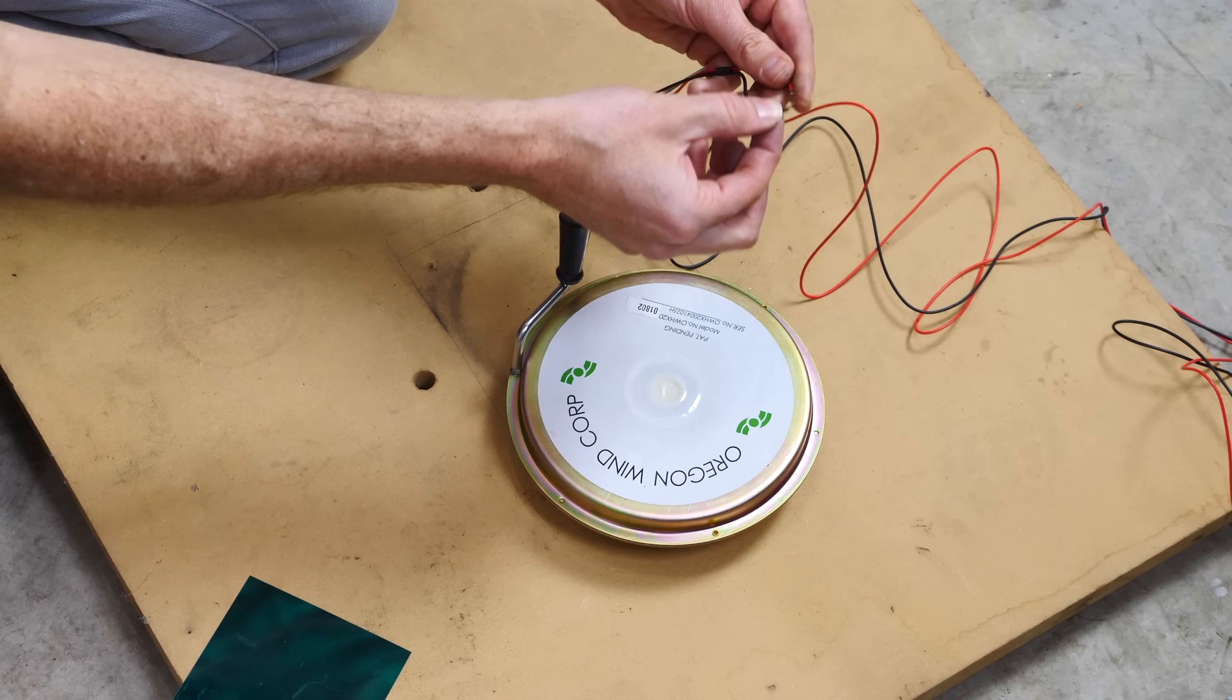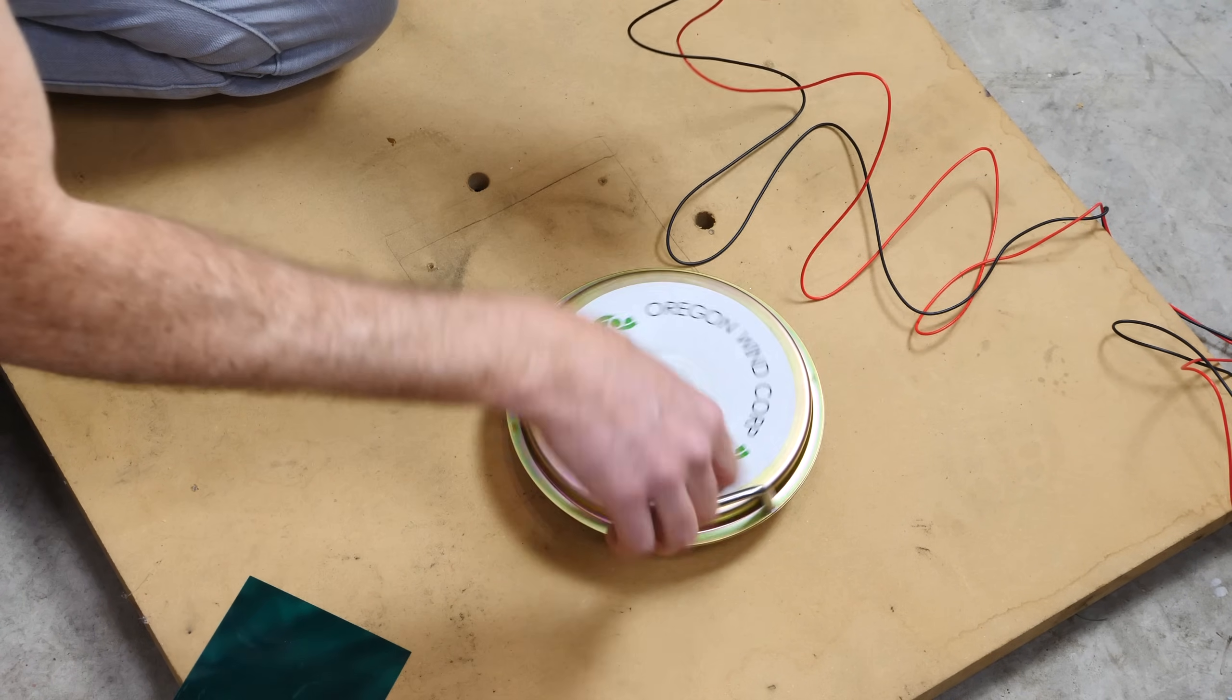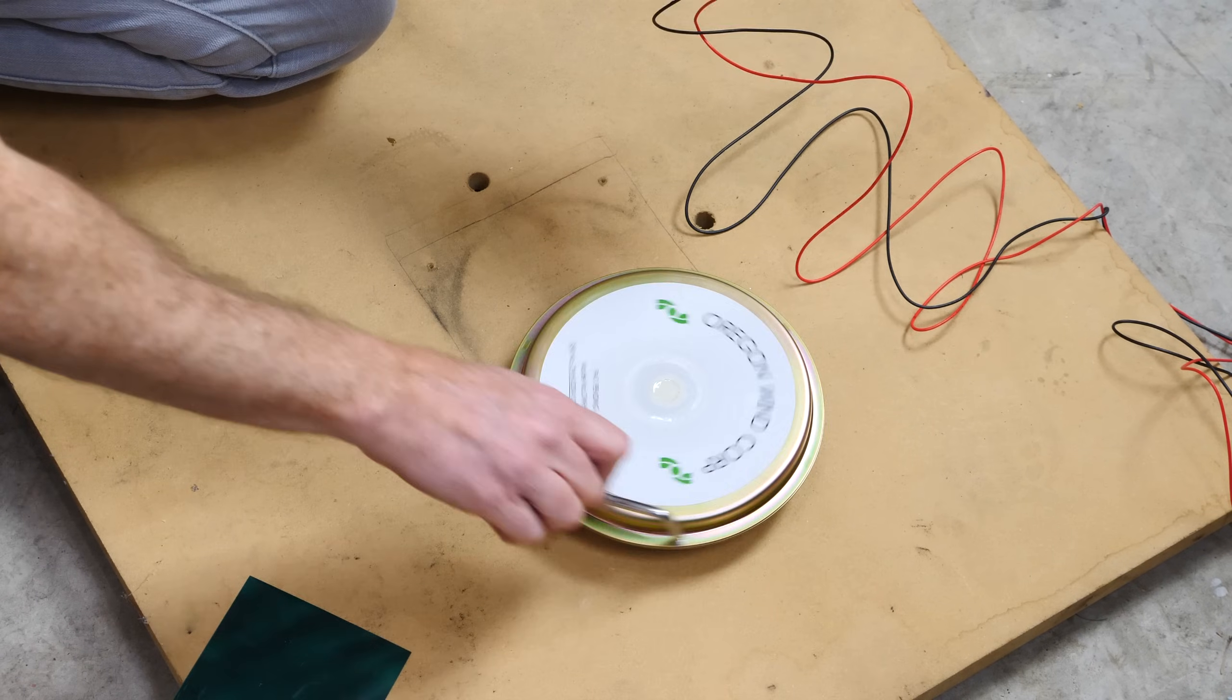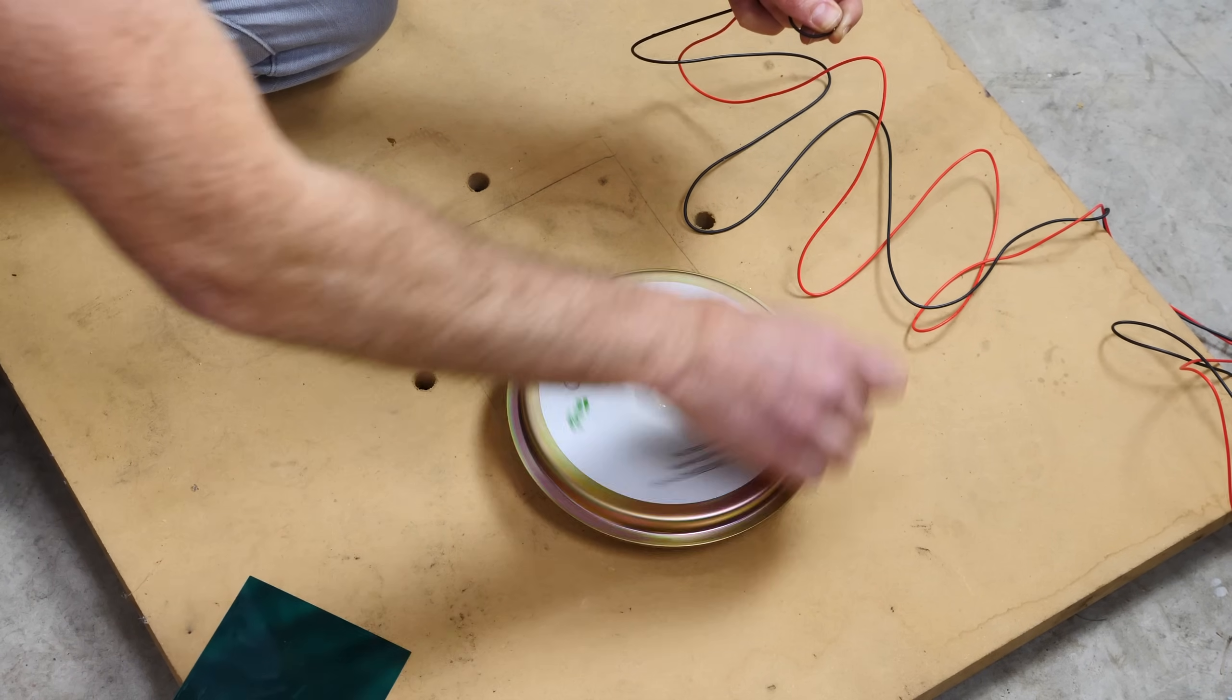So what this means is the larger amount of current that I'm moving through the system, the more electrons that I'm able to move through the whole system, the harder it is to turn.